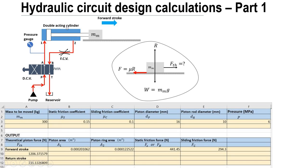We have considered a double acting cylinder for the design purpose, with a push button operated direction control valve. We have also prepared an Excel sheet so that you can change the value of mass and pressure and find out the theoretical piston force, piston area, piston ring area, static friction force, and sliding friction force. If you want this Excel sheet, you can email me — the address is given in the description. Remember that along with the hydraulic circuit, the mechanics involved is also important.